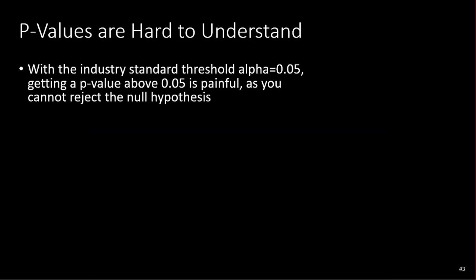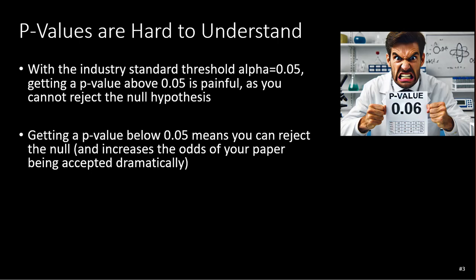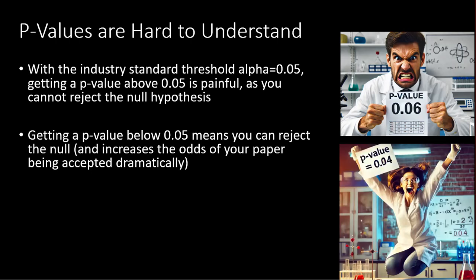With the industry standard of 0.05, if you get a p-value above 0.05, you're in pain — you cannot reject the null, and you might get angry. But if you get a p-value below 0.05, it means you can reject the null, and that will increase the odds your paper will get accepted because your idea works out.